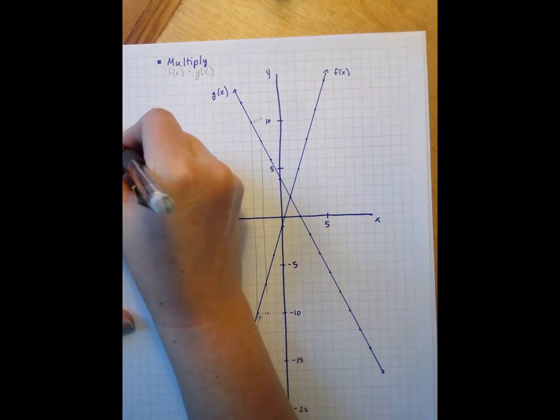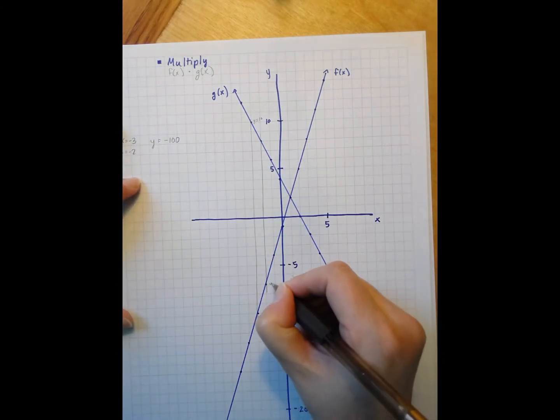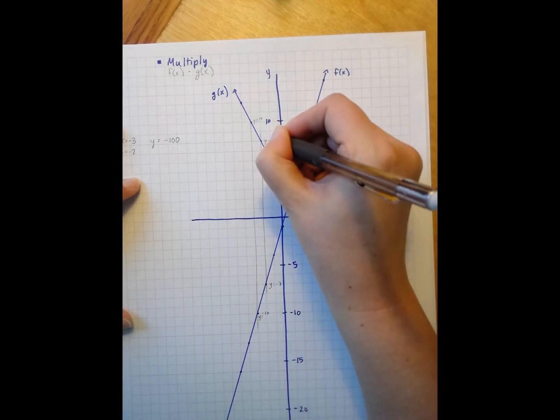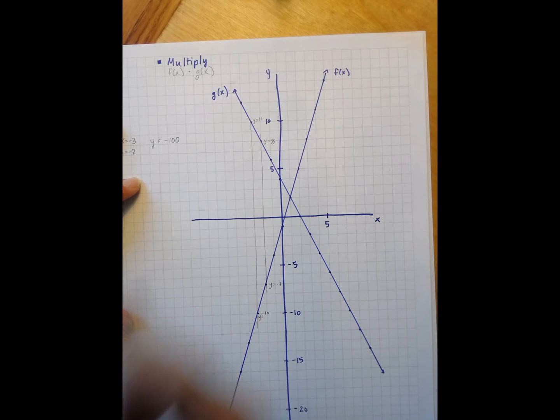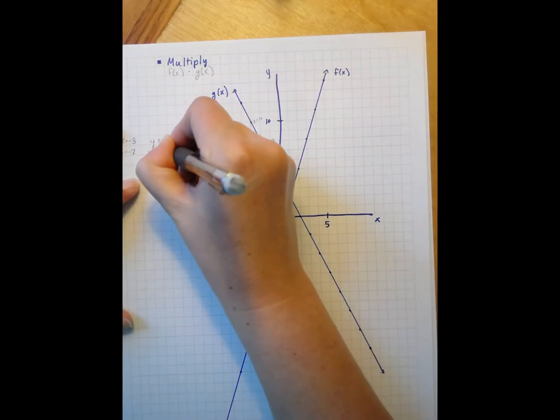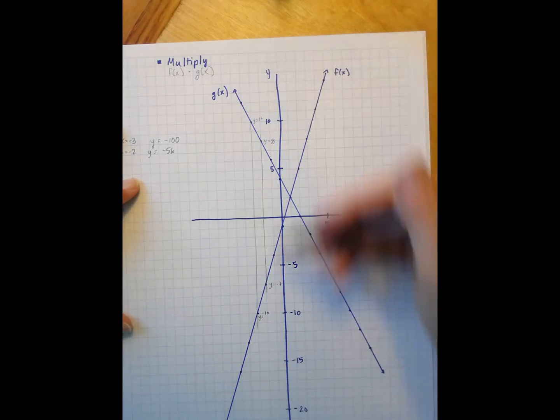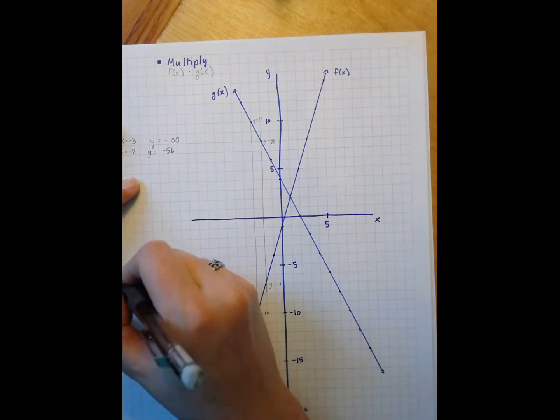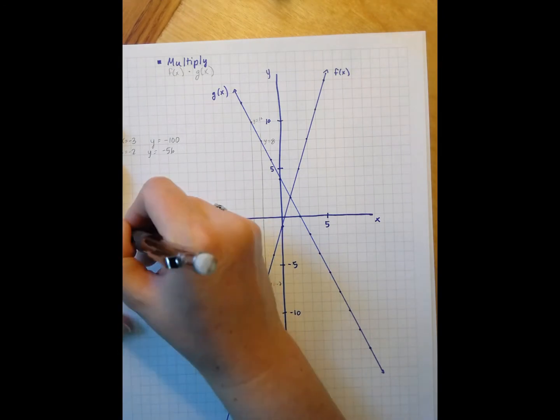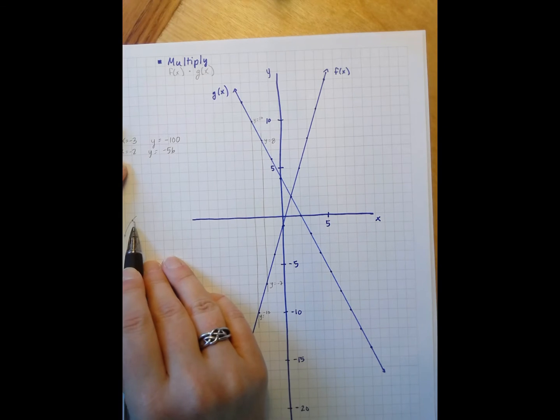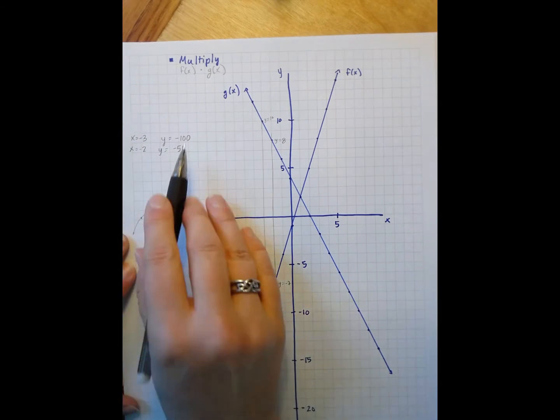So when x is negative 2, I have a y of negative 7 and a y of 8. So I'm going to get a negative 56. So again, not on my graph, but I'm seeing again that I'm pretty low down, although I'm coming up. So I'm kind of beginning to get this shape. At a low point, and then the point's still low, but a little higher than the negative 100.